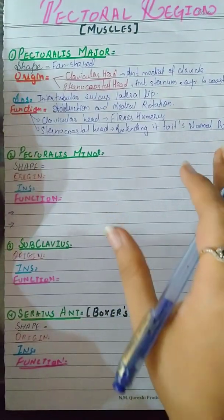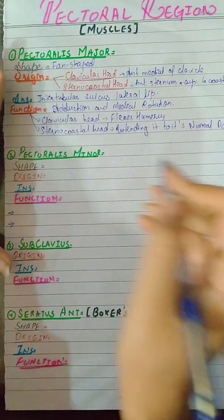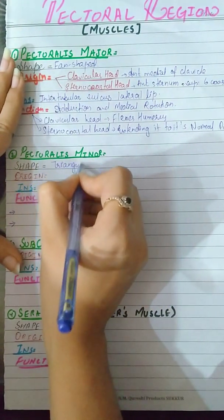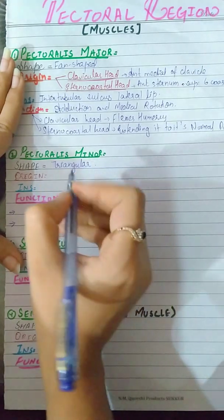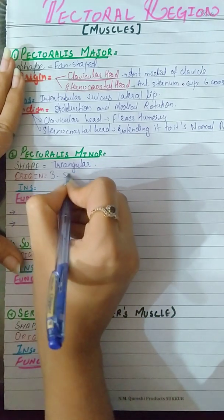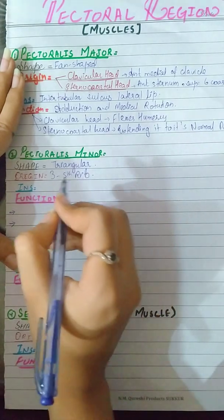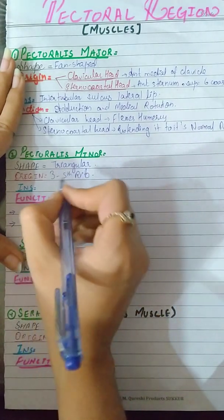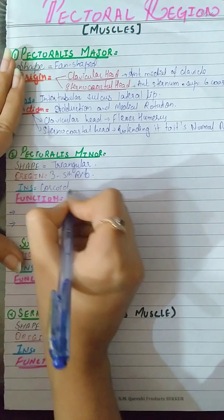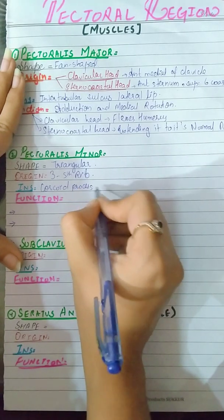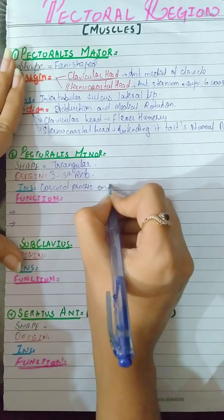Then we have our second muscle, pectoralis minor. Its shape is triangular. Its origin is from the third to fifth rib. Its insertion is on the coracoid process of scapula, on the medial border.